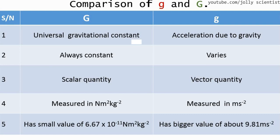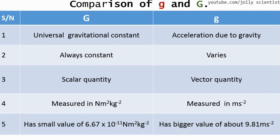Comparison between small g and big G: Big G is the universal gravitational constant, while small g is the acceleration due to gravity. Big G is always constant, while small g varies from place to place. Big G is a scalar quantity, while small g is a vector quantity. Big G is measured in N·m²/kg² with a value of 6.67 times 10 to the negative 11, while small g is measured in m/s² with a value of 9.8.